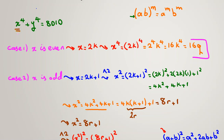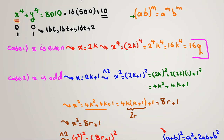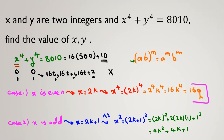So x to the 4 has remainder 0 or 1 when divided by 16, and similarly y to the 4 has remainder 0 or 1. Therefore x to the 4 plus y to the 4 can only have remainder 0, 1, or 2 mod 16. But 8010 divided by 16 equals 16·500 + 10, so the remainder is 10. Since 10 is not 0, 1, or 2, it is impossible — there are no integers x and y satisfying this equation.